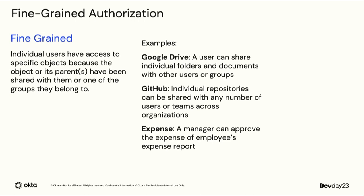Next, we want to define what fine-grained authorization is. Fine-grained means that individual users have access to specific objects because the object or its parents have been shared with them or one of the groups they belong to. Examples include Google Drive, where a user can share individual folders and documents with other users or groups, GitHub, where individual repositories can be shared with any number of users or teams, or even something as simple as an expense report where a manager can approve an employee's report.